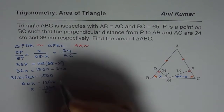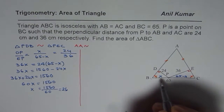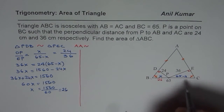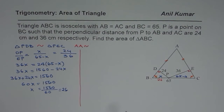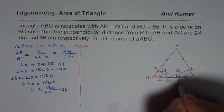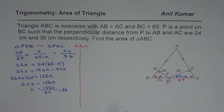So we get X equals 26. The other side will be 65 minus 26, which is 39. When you add them up you get 65, confirming our result.